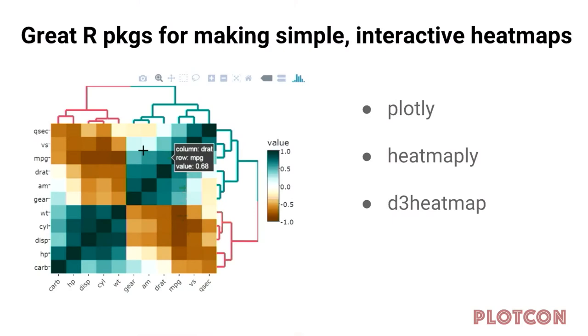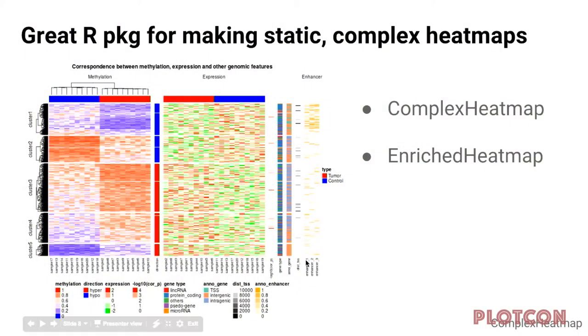In R there's already a lot of great packages for making various kinds of heat maps. There are packages for making pretty simple interactive heat maps — the plotly package on its own has some functionality for heat maps, there's also the heatmapply package which is built on top of plotly, and the D3 heat map which is built off of D3 and comes from RStudio. There's also a really great R package for making complex heat maps in a static way — the aptly named ComplexHeatmap package and its companion package EnrichedHeatmap, which is targeted towards genomics.